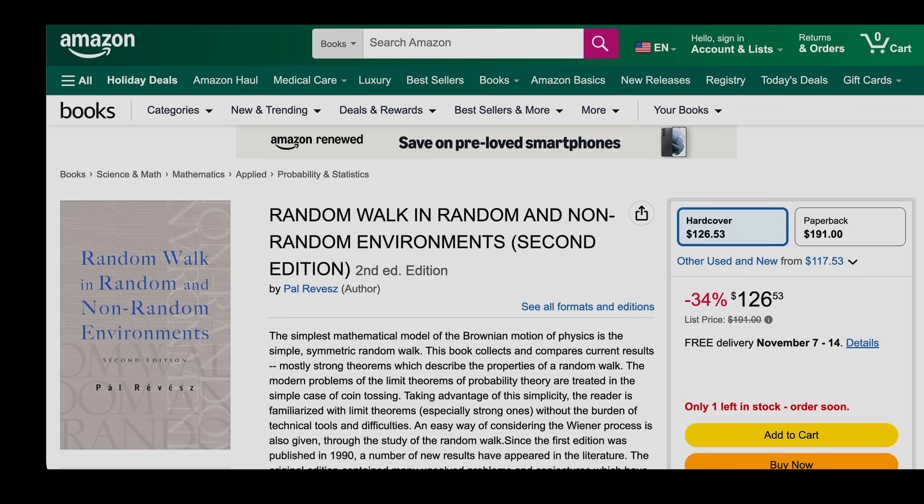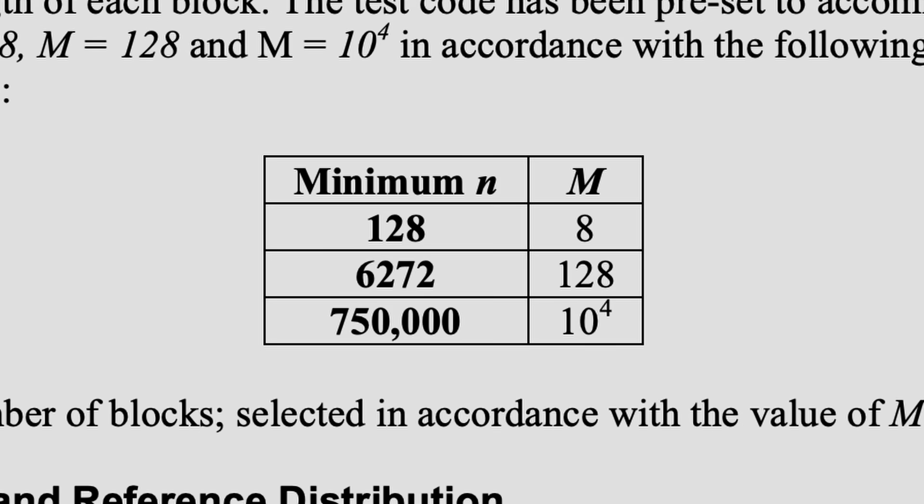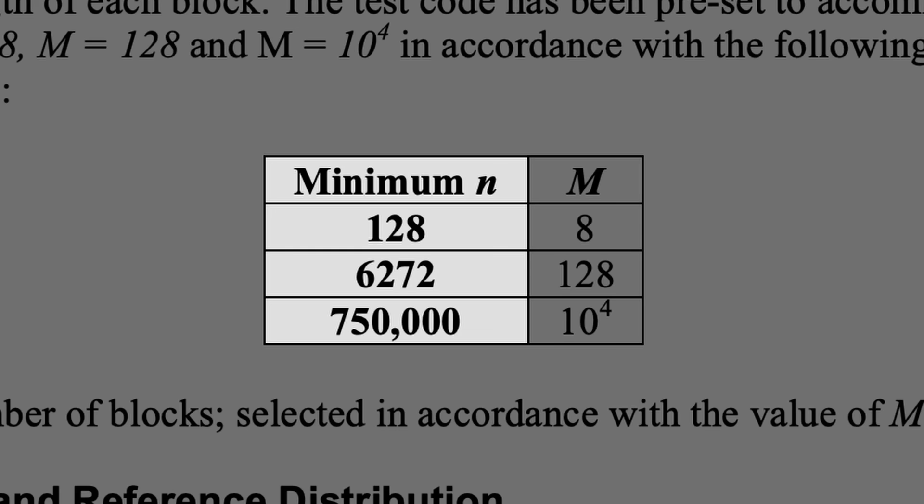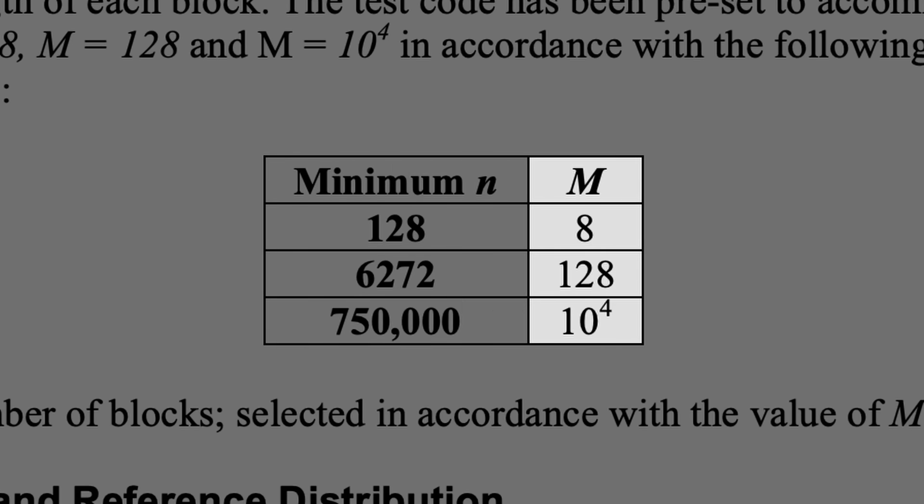Which of the 396 pages is the relevant theorem on? Who knows? The block size needs to be set based on the length of the input string according to this table. Why are the cutoffs at 128, 6,272, and 750,000? Magic. And why are the corresponding block sizes 8, 128, and 10,000? Magic.